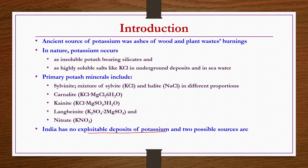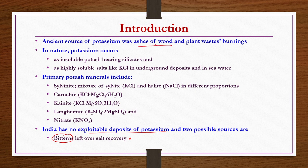What are the possible sources of potassium in India? One source is bitterns — the highly concentrated, viscous solution remaining after salt recovery. It is a very good source of not only potassium but also several other minerals. Another source is fermentation by-products: molasses and distillery slops after fermentation must also contain some amount of potassium. These are two possible sources for potassium in India.